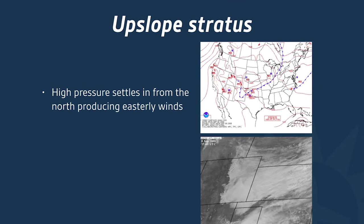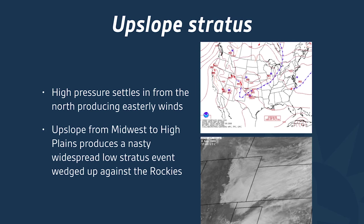Another classic event is called upslope stratus. A high pressure settles in from the north, moving into the Midwest and high plains, producing an easterly wind — say, from Chicago to Denver. The terrain from St. Louis to Denver rises in that direction, causing very gentle lifting. This can produce a widespread area of low stratus as that air gets wedged against the Rockies. You can almost see the front range of the Rockies in the satellite image, showing that air lifted gradually from east to west.